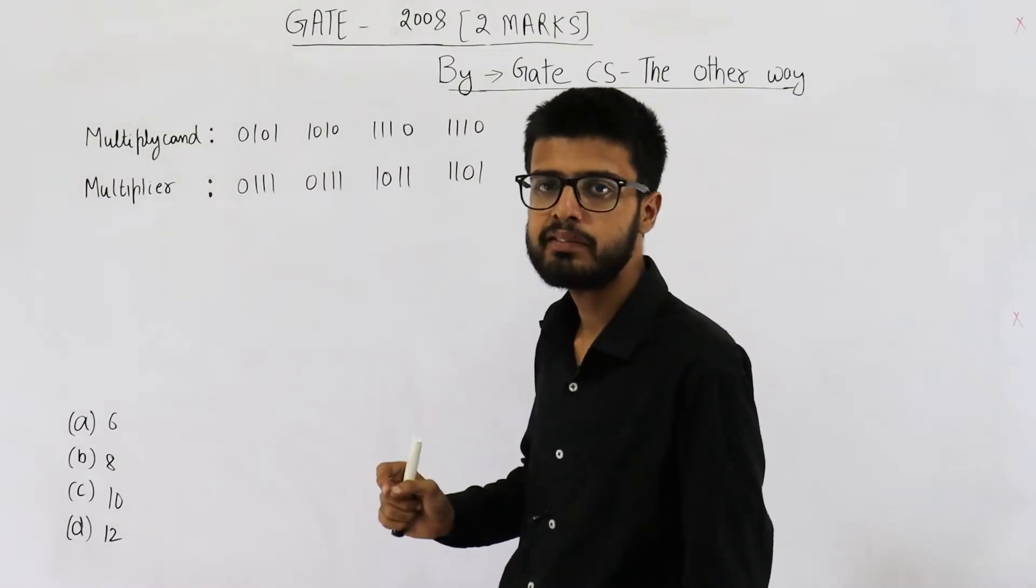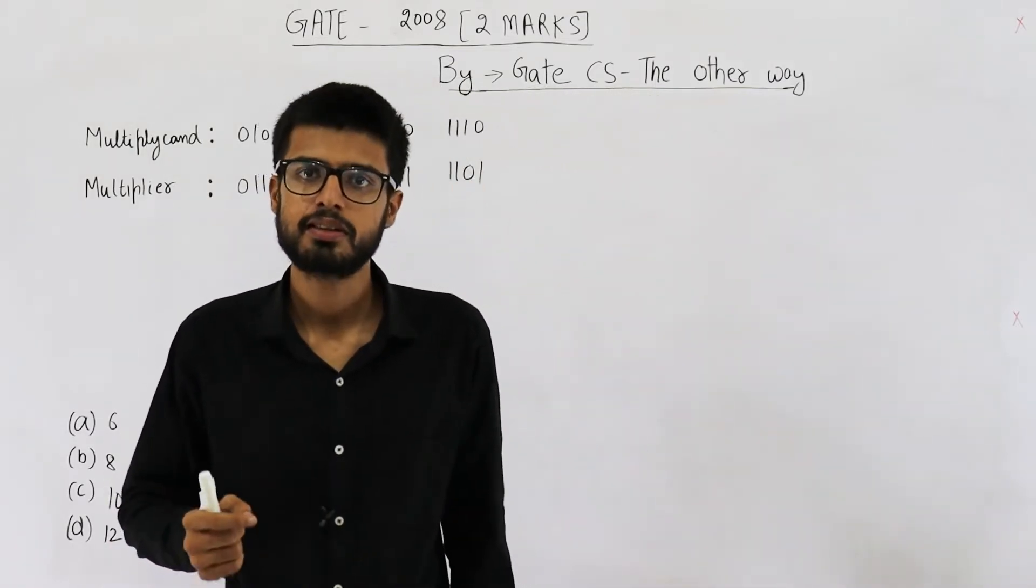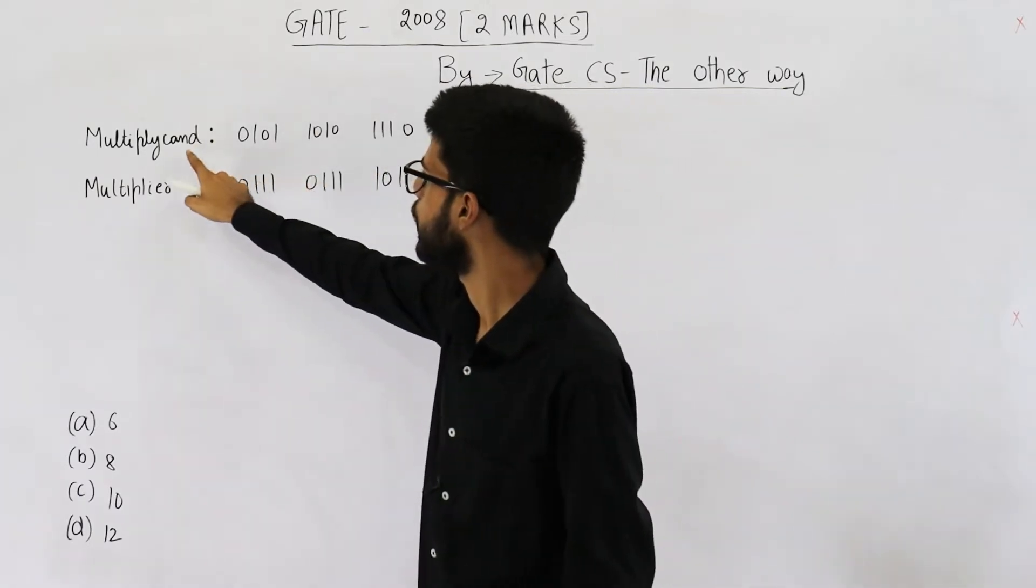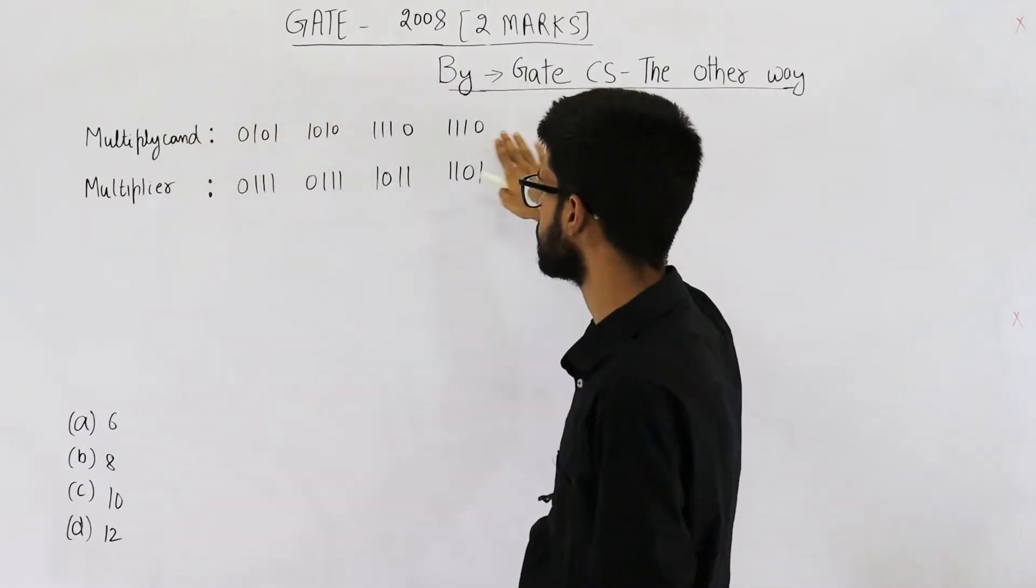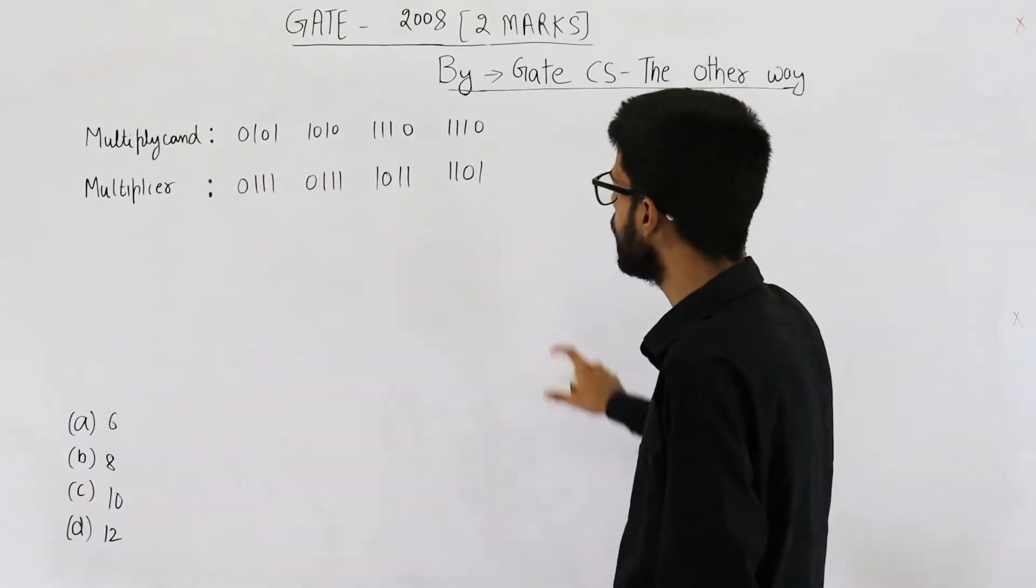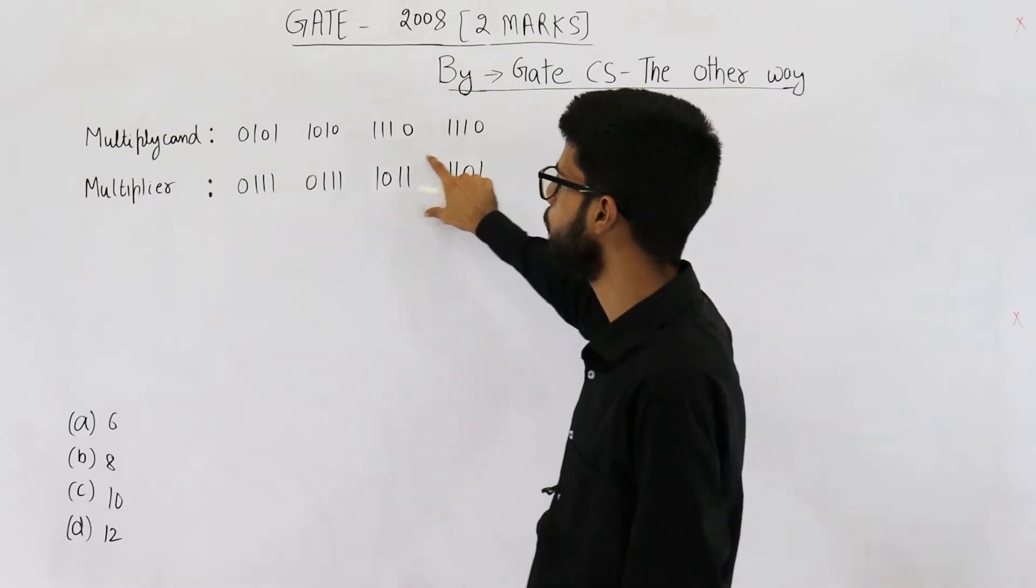Now you very well know in determining the number of additions and subtractions, you don't need multiplicand. So this is useless information from point of view of solving this question. We only need to focus on multiplier.